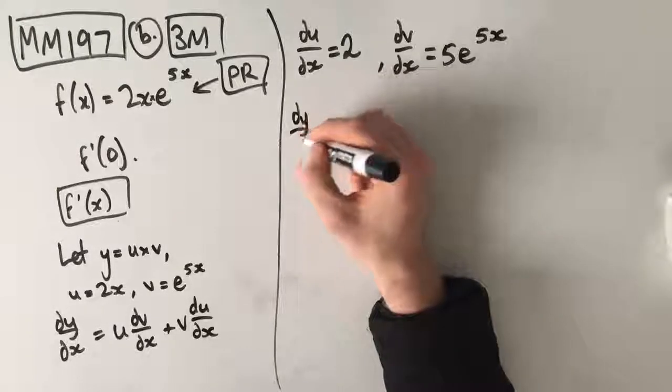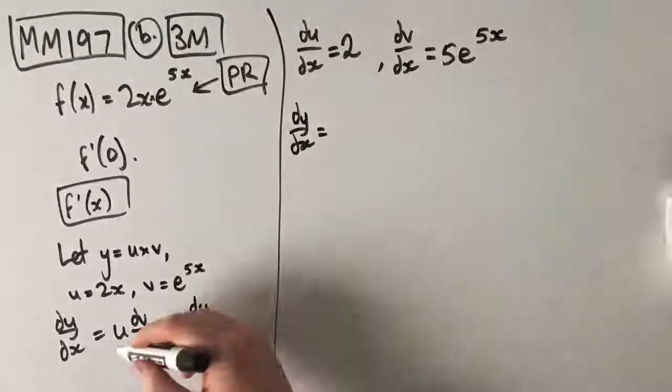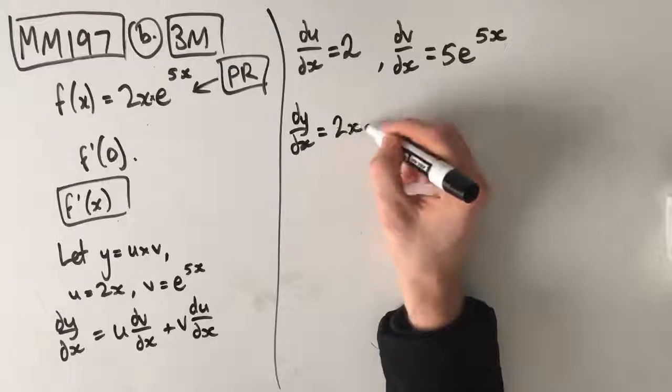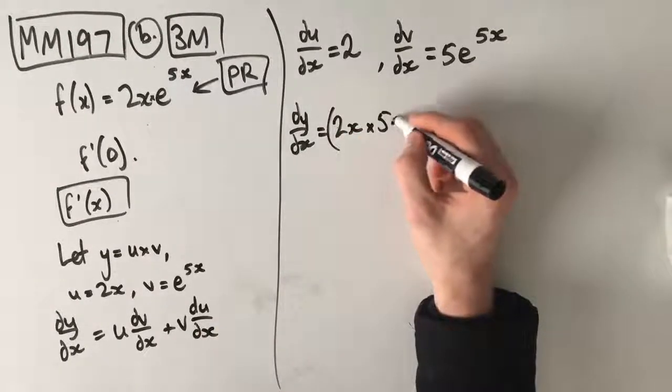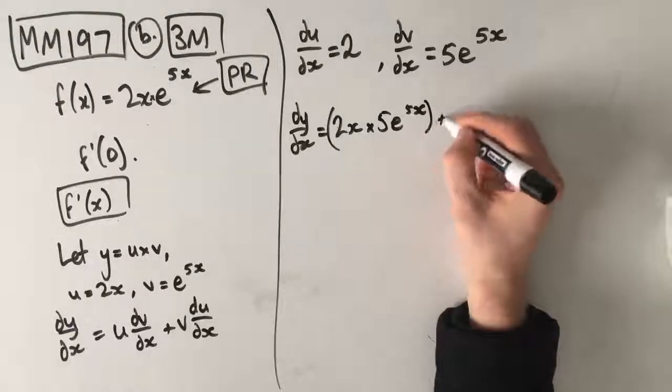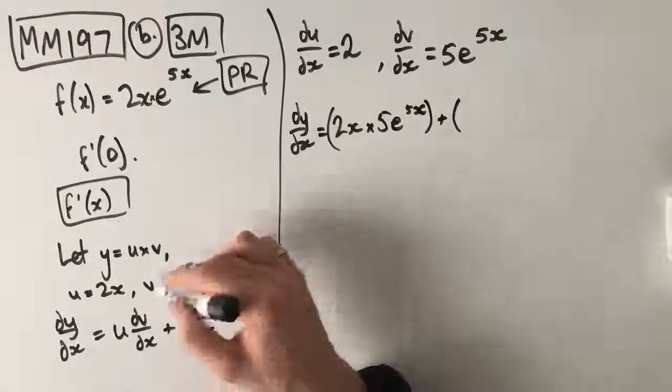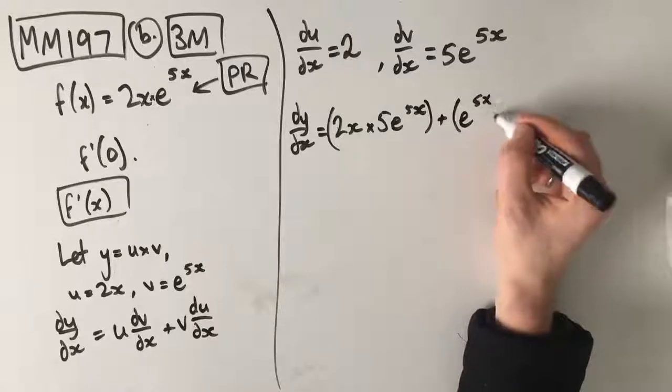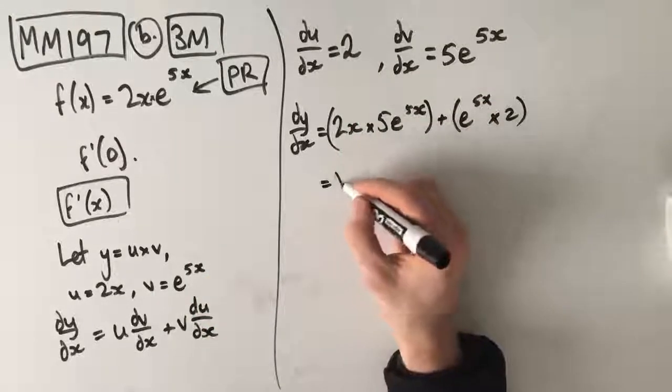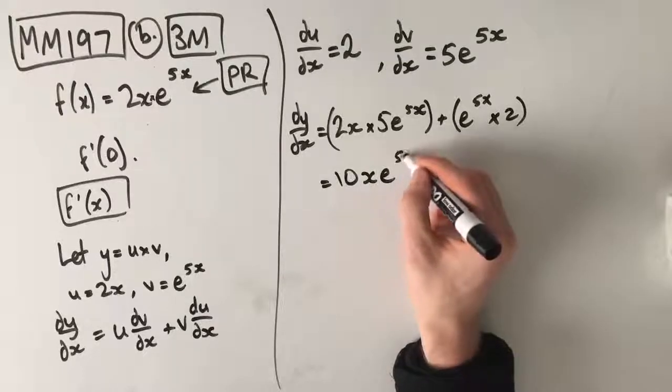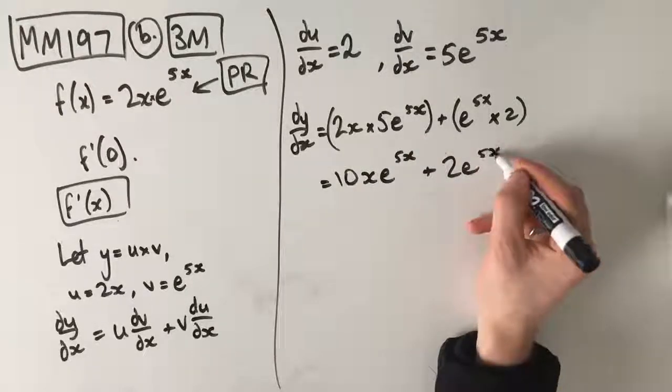So, from here, all we're going to do is simply plug in our values. So, dy dx is equal to u, which is 2x, times dv dx, which is 5e to the 5x, plus v, which is e to the 5x, times du dx, which is 2. Which means we get 10xe to the 5x plus 2e to the 5x.